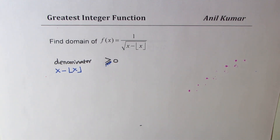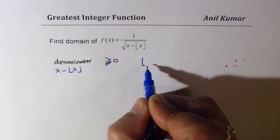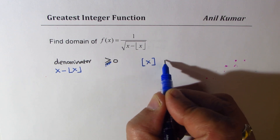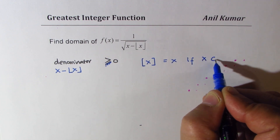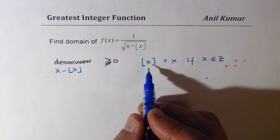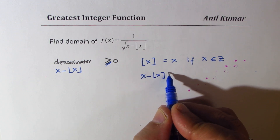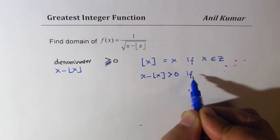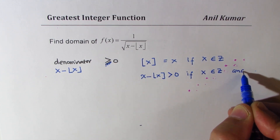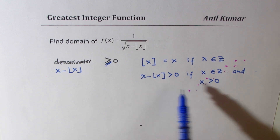Now, if x is an integer, the greatest integer function of x equals x itself, making x − ⌊x⌋ = 0. But if x is not an integer and x is greater than 0, then x − ⌊x⌋ is greater than 0. So we need x to be positive and non-integer.